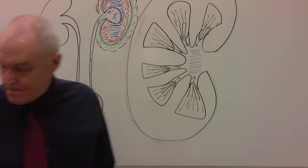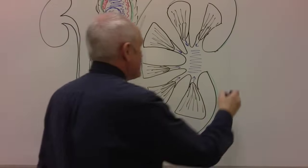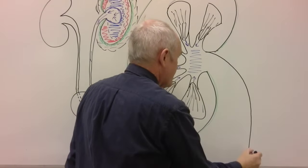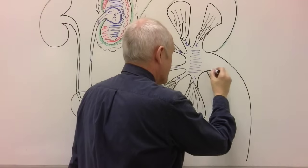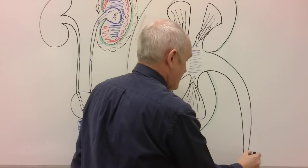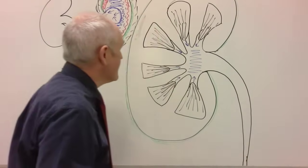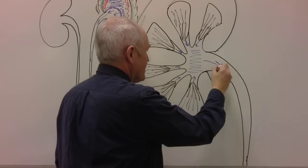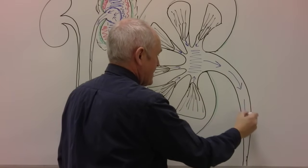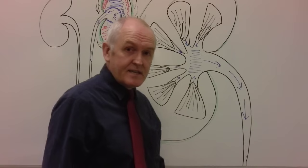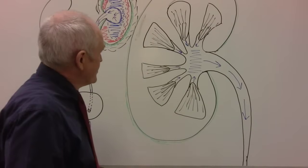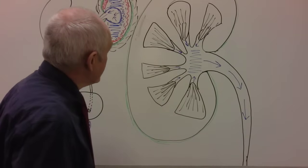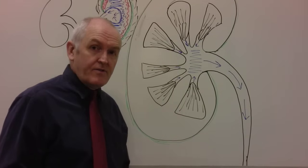From the renal pelvis, the ureter is continuous with the pelvis and will take the urine down towards the bladder. The urine is peristaltically transported down towards the urinary bladder for storage prior to passing — which is the process of micturition.